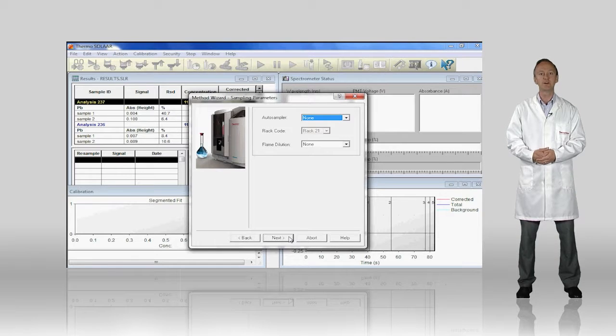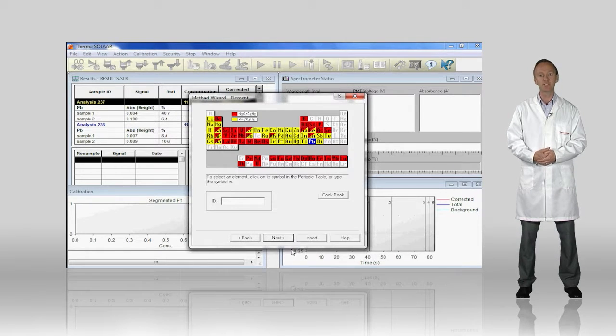Performance routines can be defined in the method to ensure the best quality data for every analysis. A method can be fully optimized for performance and still achieve a 5-point calibration and 20 samples in around 3.5 minutes per element.